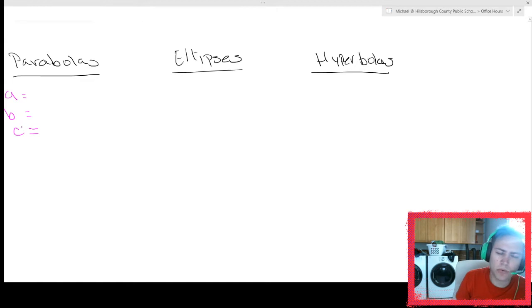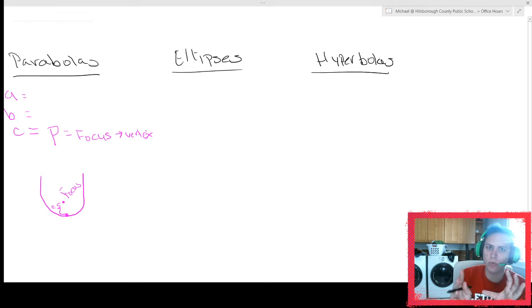Actually, with parabolas though, we don't even really call it C. With parabolas, we actually call it P, right? And so P is going to be, if I draw this parabola right here, P is going to be this length right here from the center or the vertex of my parabola to the focus.